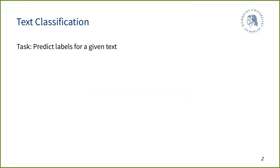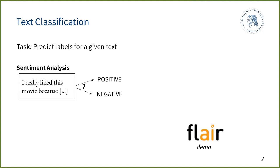I'd like to introduce a task called text classification. It's a very basic NLP task where, given a piece of text, you want to predict labels. A very classic example is sentiment analysis, where you want to identify whether the person who wrote the text was in a positive or negative mood. If somebody writes 'I really like this movie,' the sentiment classifier should detect positive; if somebody writes 'I really hated this movie,' it should detect negative.